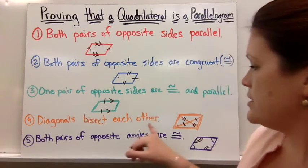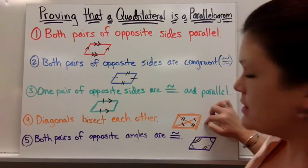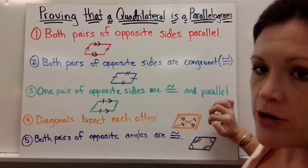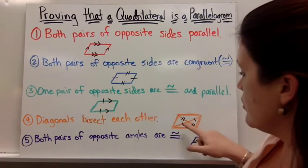Diagonals bisect each other. So when they bisect each other, that means that the two halves of that diagonal, once bisected by the other diagonal, would be congruent or equal.